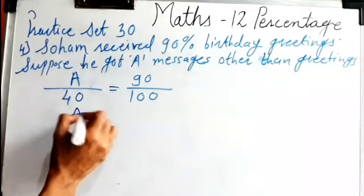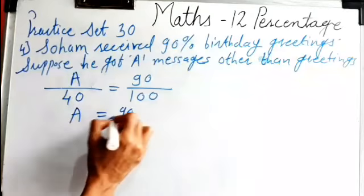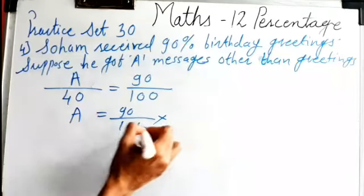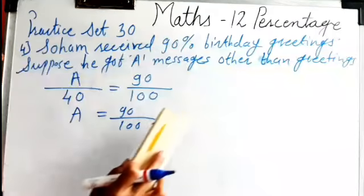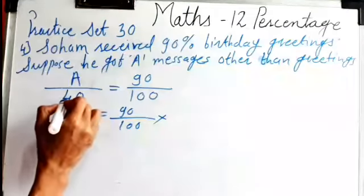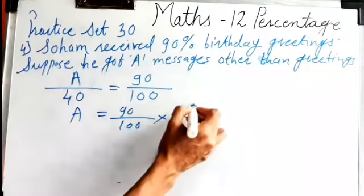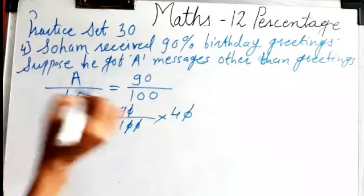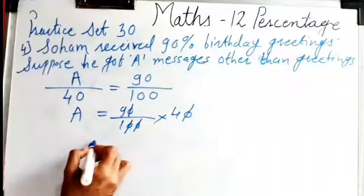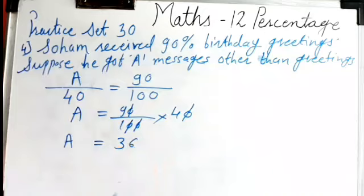So A is equal to 90 upon 100. A stays on this side, and this 40 will go to that side — or you can multiply both sides by 40. Then the zeros cancel: this zero cancels with this zero. So here I get 9 times 4, which is 36.